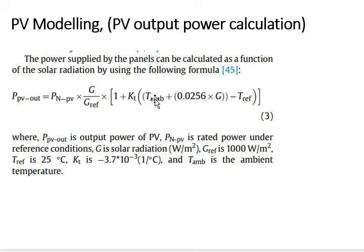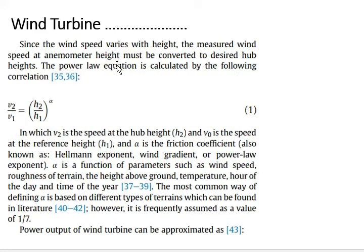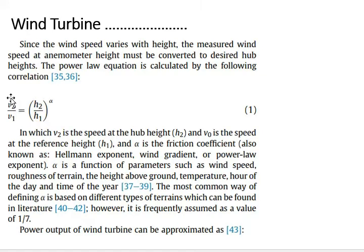Coming to the wind turbine modeling. Wind can be considered as a free available energy source that can be utilized for electrification. Since the wind speed varies with height, the measured wind speed at anemometer height must be converted to desired hub heights. The power law equation is calculated by the following correlation, where V2 is the speed at the hub height H2, and V0 is the speed at the reference height H1.